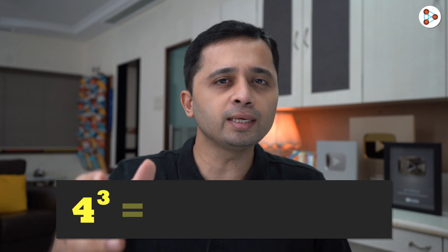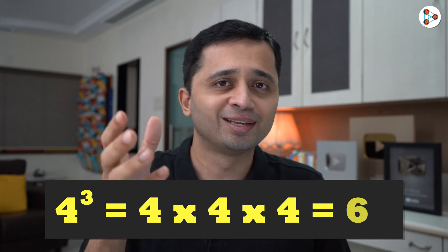We have already studied exponents in school. 4 to the power 3 is 4 multiplied by 4 multiplied by 4 which is 64.